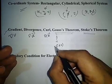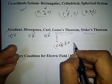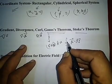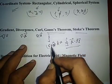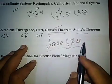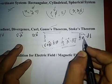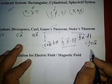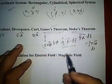By Gauss theorem, del dot vector A integrated over volume equals the surface integral of vector A dot dS over a closed surface. By Stokes theorem, the closed line integral of vector A dot dL equals the surface integral of del cross vector A dot dS. Both theorems are very important for the exam.